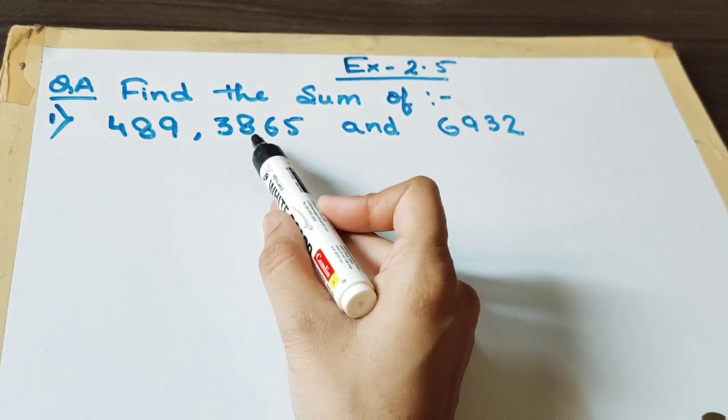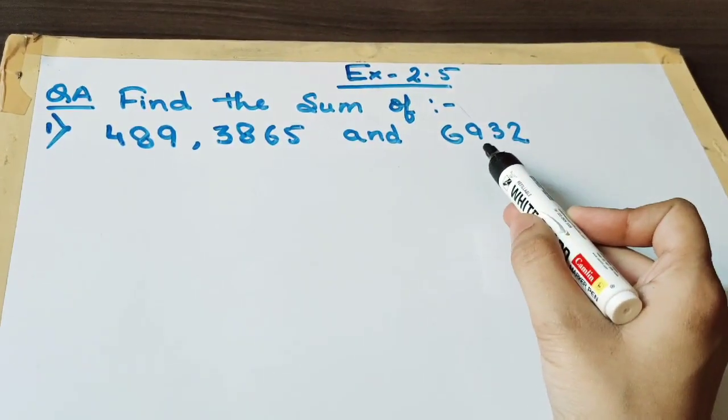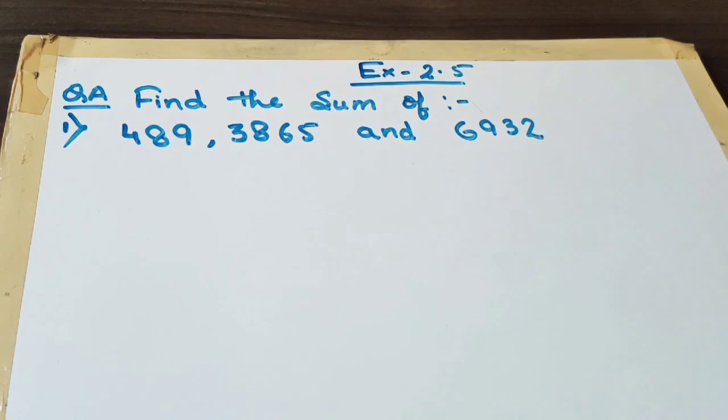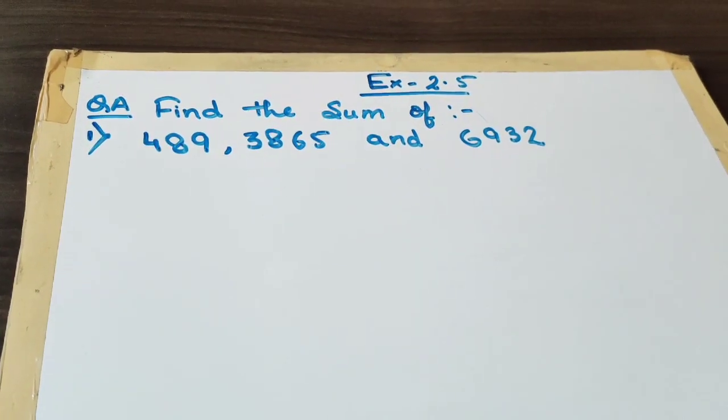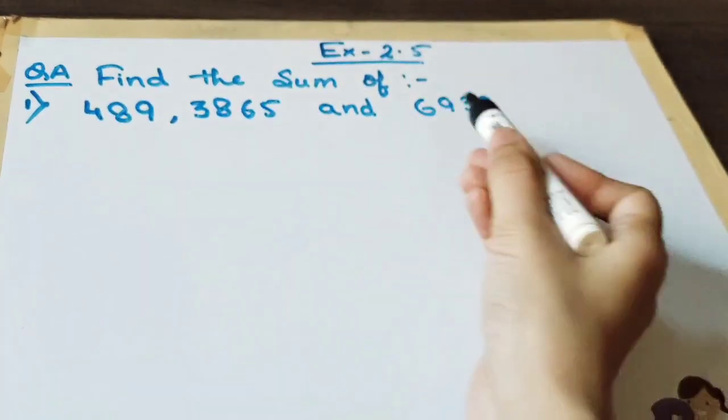489, 3865 and 6932. Now we have to find out the sum of these 3 numbers.